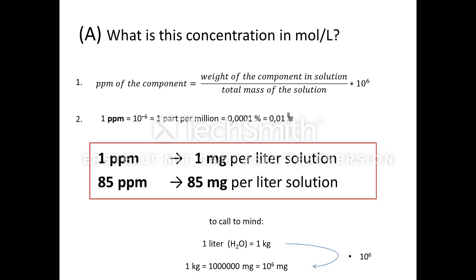To call to mind, here's some help for the conversion. The question was how much mole per liter are 85 ppm oxygen. So we have to convert our 85 milligram per liter oxygen into mole per liter.